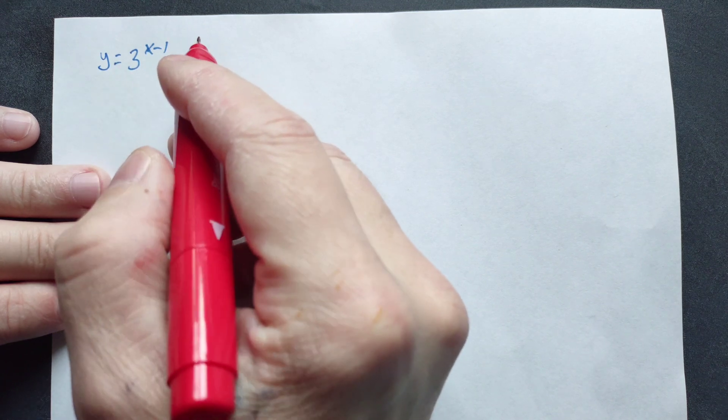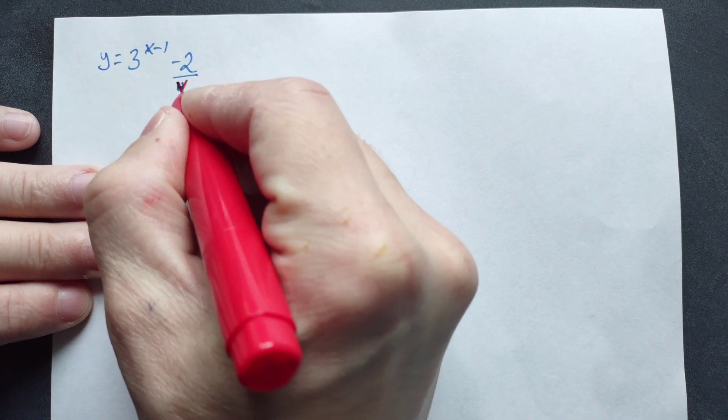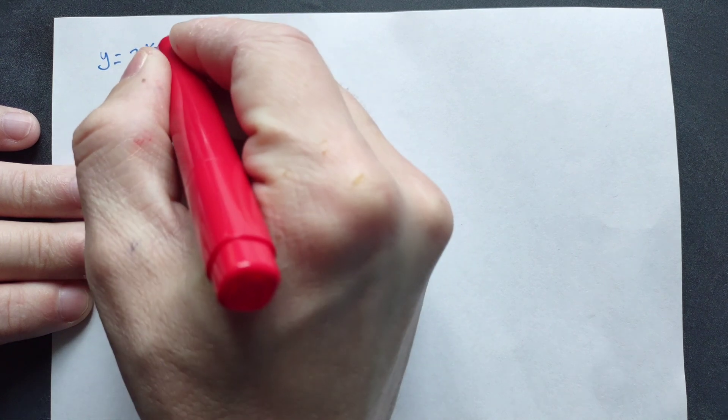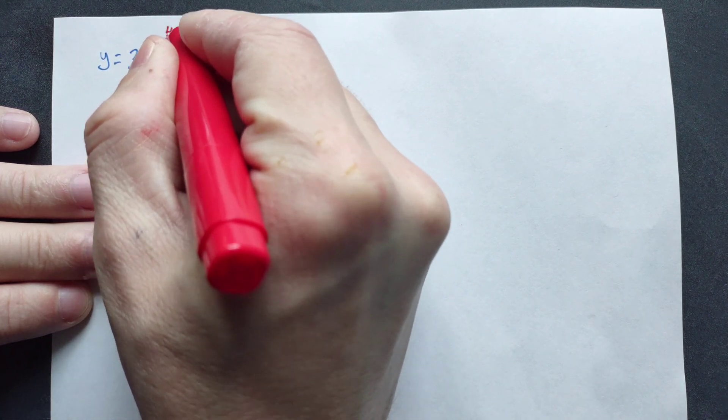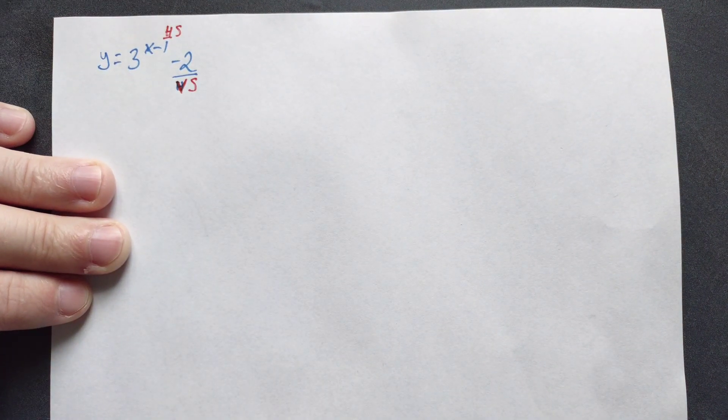Let's sketch y equals 3 to the x minus 1 minus 2. So this tells you the vertical shift. And the 1 right here tells you the horizontal shift. You need to know both of those pieces of information.